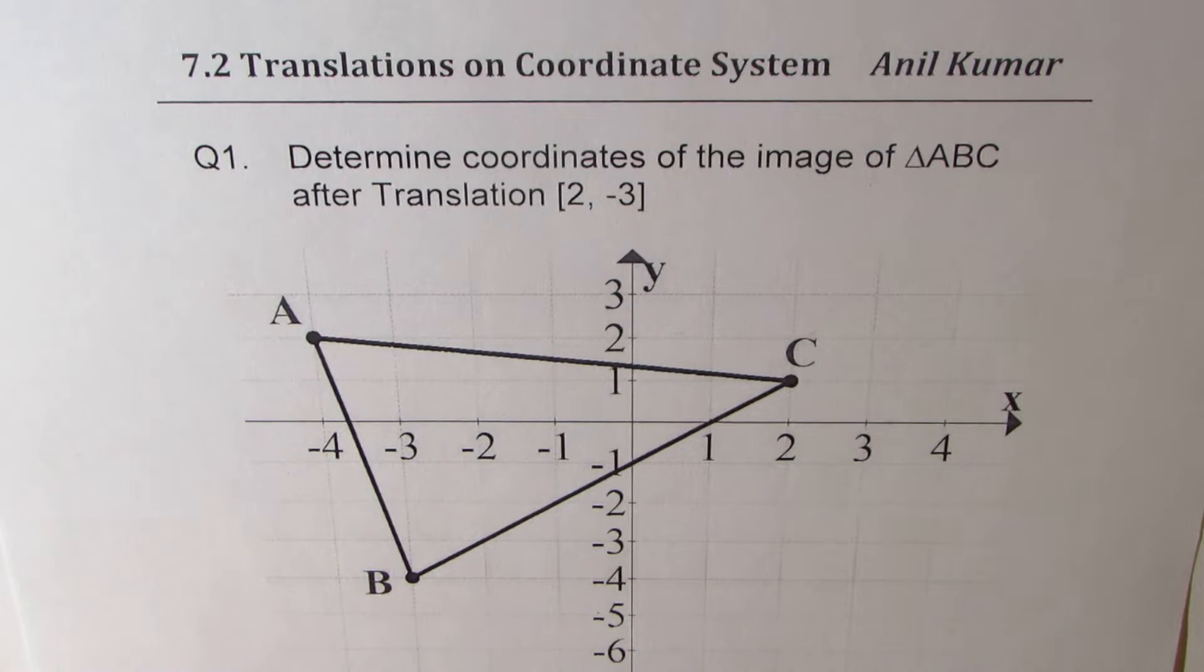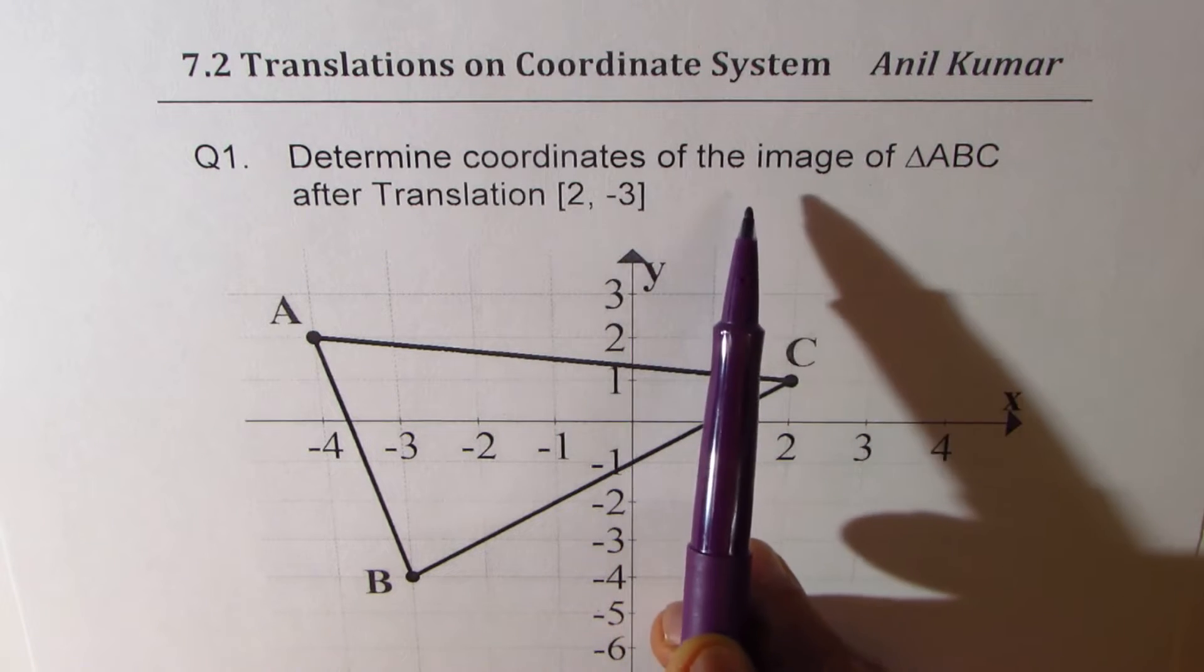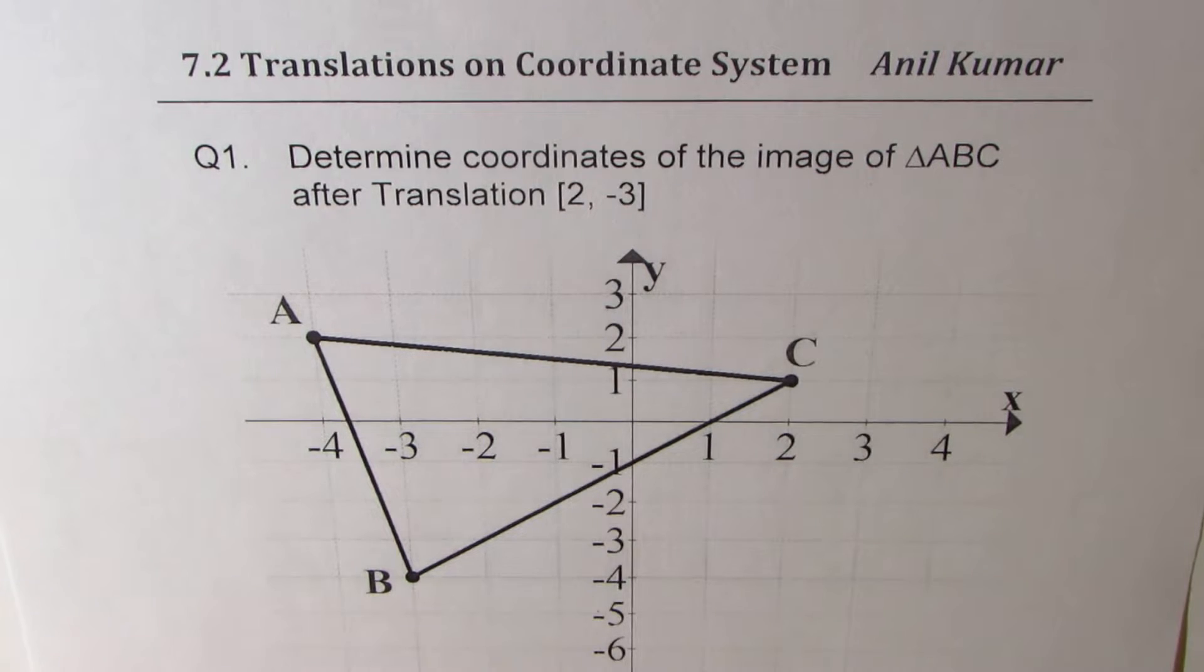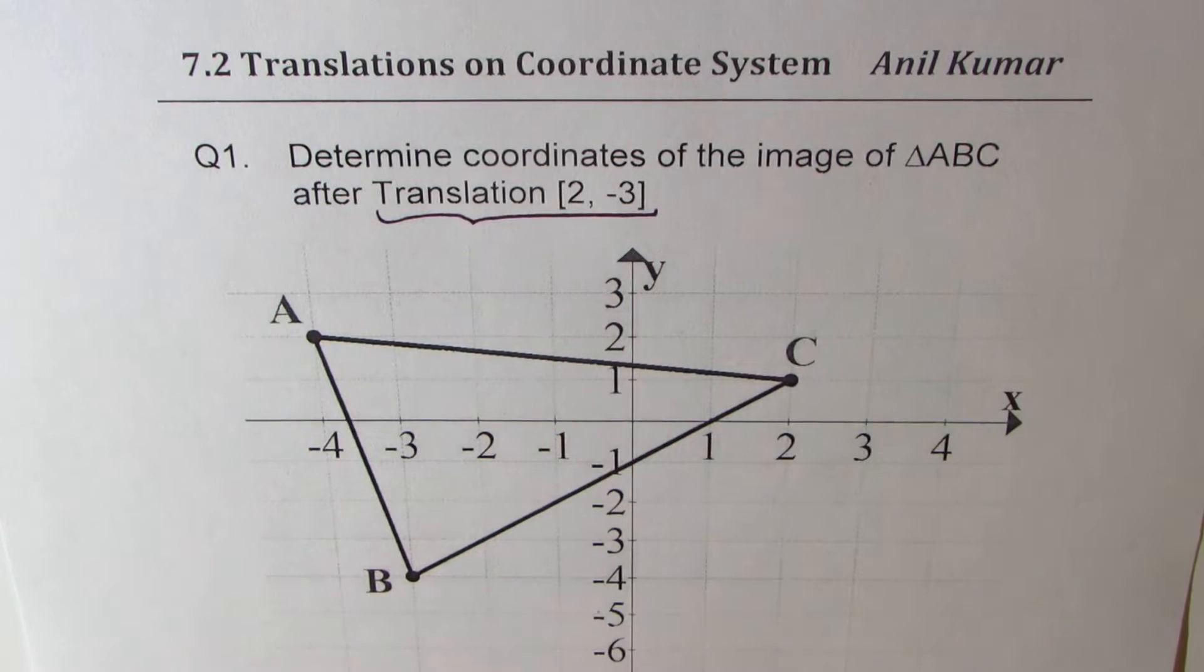I am Anil Kumar. Welcome to my series on coordinate systems. Let us now talk about translations. I'll actually give you all the concepts with help of two examples. Here is question number one. The word here is translation vector.